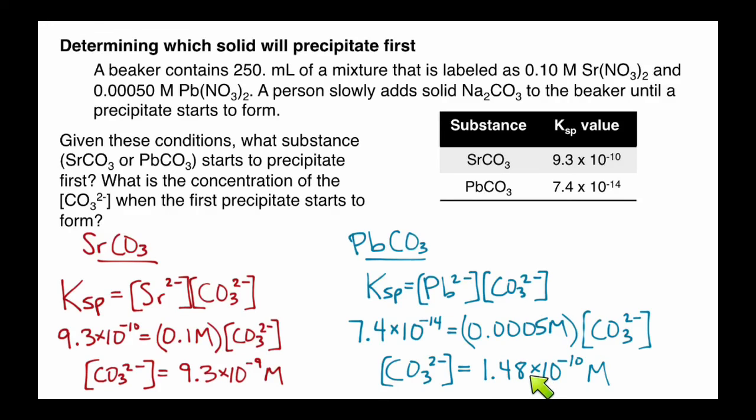Now we've got to now compare these two values. In other words, as we add the carbonate from the sodium carbonate to the solution, what will we reach first, this carbonate concentration or this one? In other words, we've got to find the smallest one. It turns out that the smallest of the two carbonate ion concentrations, when their respective compounds will precipitate out, is going to be for lead carbonate.